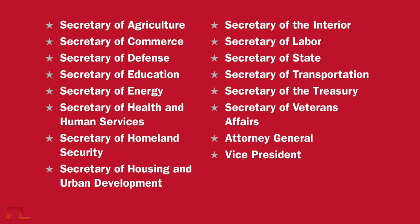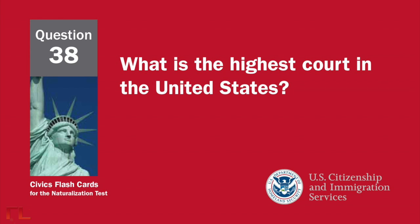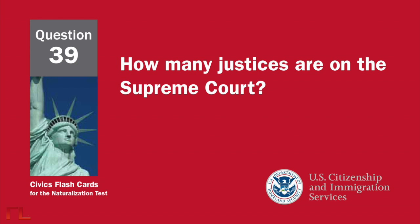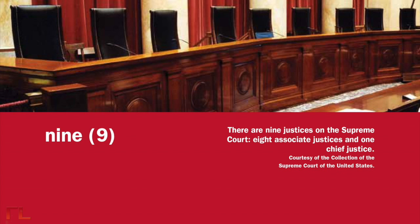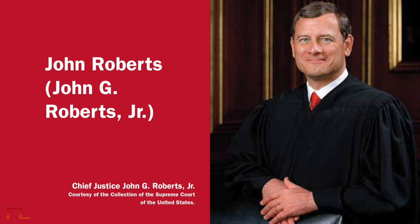What does the judicial branch do? It reviews laws, explains laws, resolves disputes and disagreements, and decides if a law goes against the Constitution. What is the highest court in the United States? The Supreme Court. How many justices are on the Supreme Court? Nine. Who is the Chief Justice of the United States now? John Roberts, or John G. Roberts Jr.